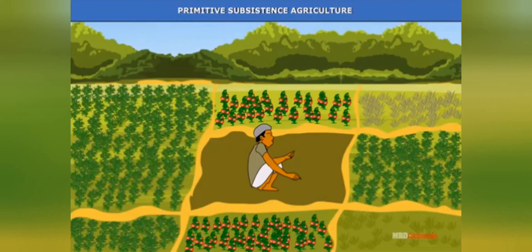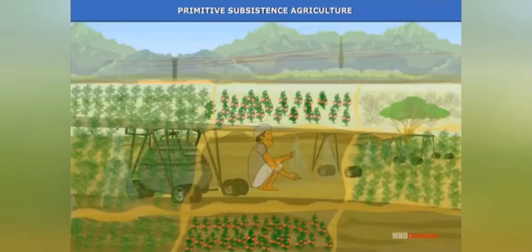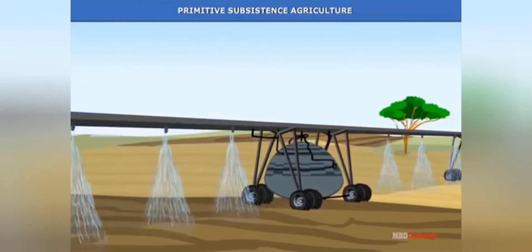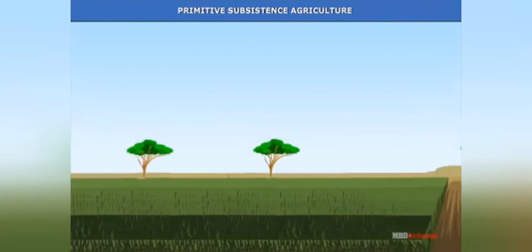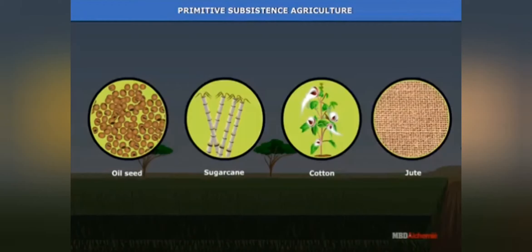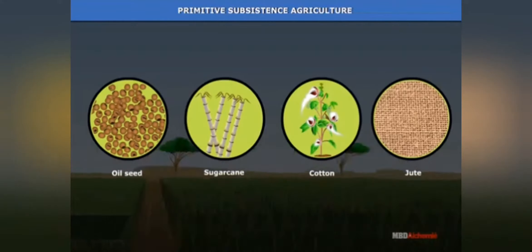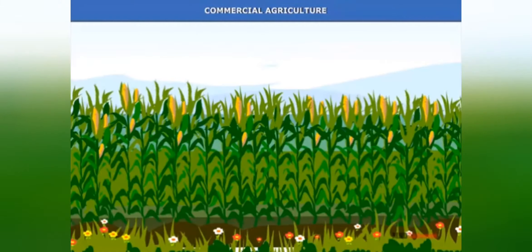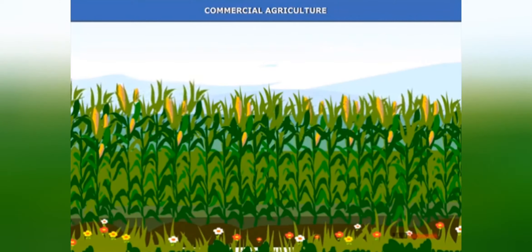Nowadays primitive subsistence agriculture has developed with improved irrigation systems. Under this type of farming, farmers now also grow oilseeds, sugarcane, cotton, and jute. So both food grains and non-food crops are being grown under primitive subsistence farming.